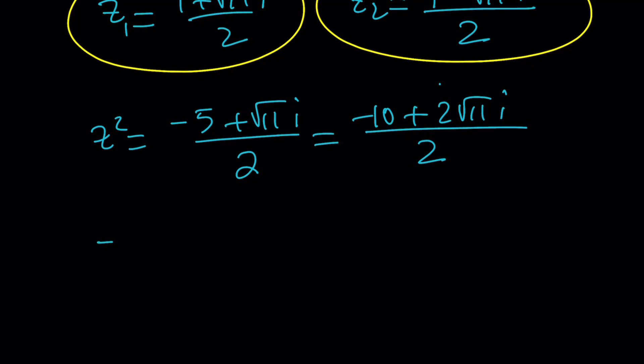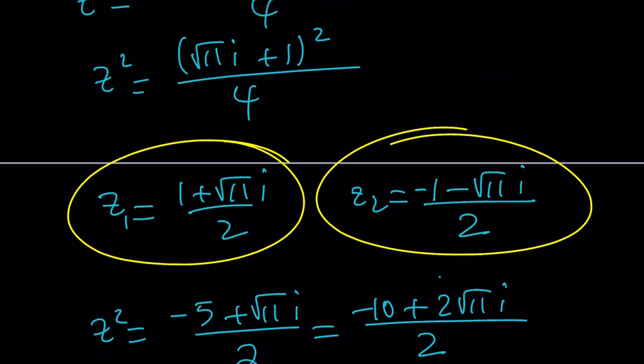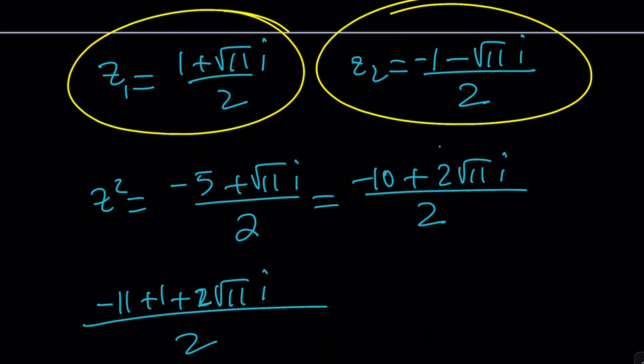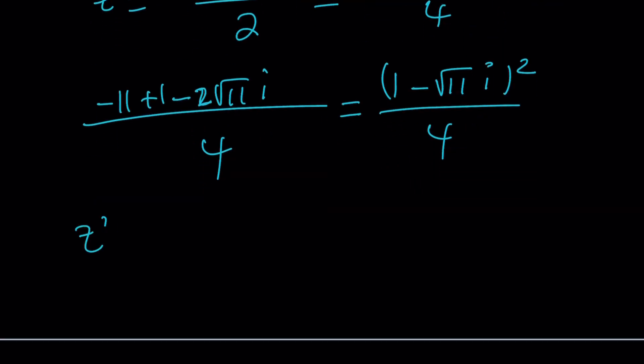z squared equals negative 5 minus root 11 i over 2. Double the top and bottom. This time, because of negative 10 again, I'm going to write this as negative 11 plus one minus two root 11 i. The two root 11 is positive, so I need to write this as one minus root 11 i squared. This should turn into a 4 as well. I made two mistakes, sorry about that. Let's fix them real quick.